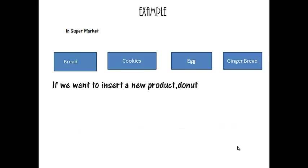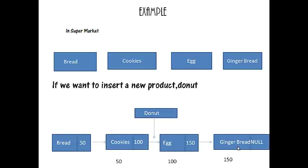Consider an example. In a supermarket, items are organized in alphabetical order — say bread, cookies, egg, and gingerbread. If they are introducing a new product, say donut, it has to be placed in between cookies and egg. So they have to move all the items to the right to insert a particular item. It is a complicated process.